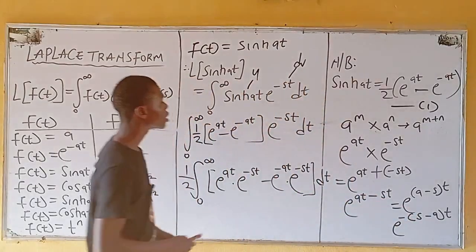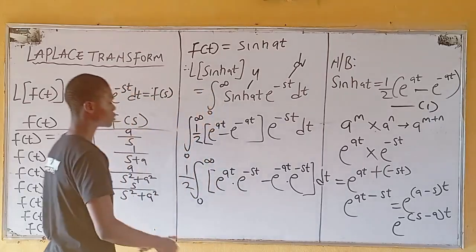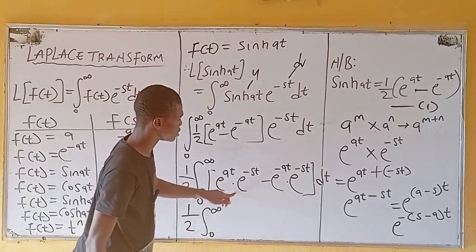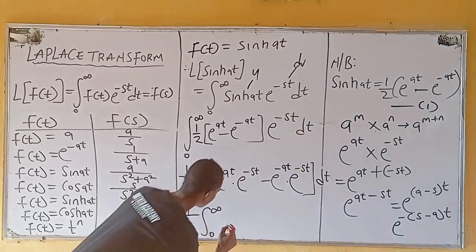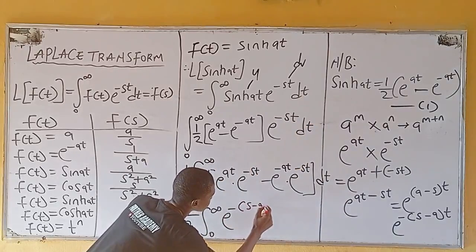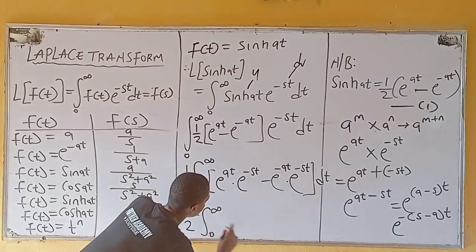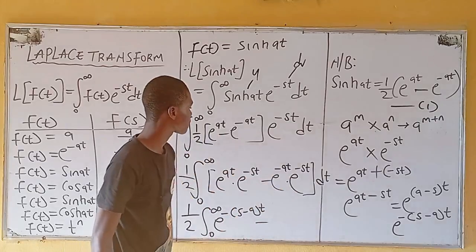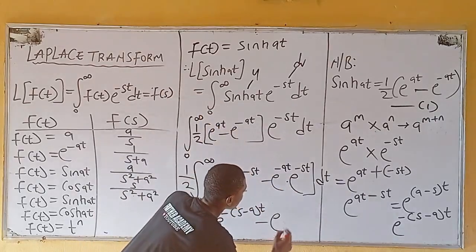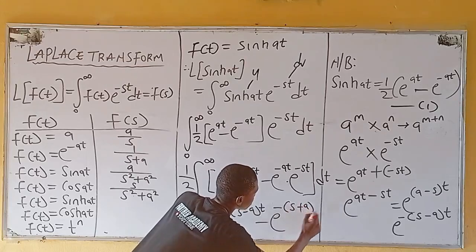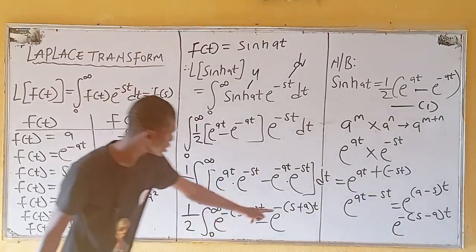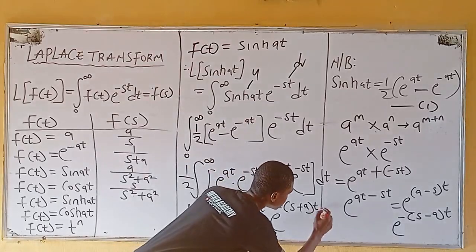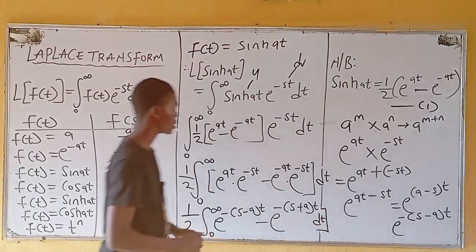Back to the integral function, it becomes one-half times the integral from 0 to infinity of [e^(-(s-a)t) minus e^(-(s+a)t)] dt. Now I can integrate. Recall that the integral of e^(kx) dx equals e^(kx) divided by k plus C. Implementing the same idea, let's take each term individually — integrate the first term and also integrate the second term. Don't forget your limits; this is a definite integral with lower and upper limits.